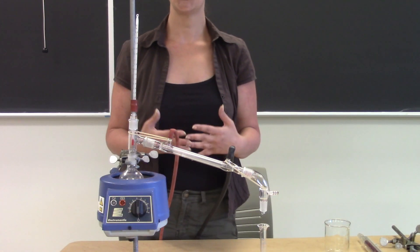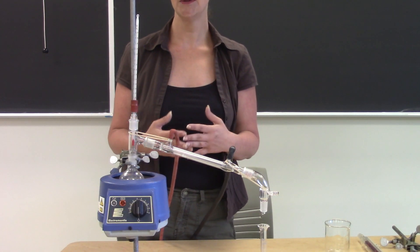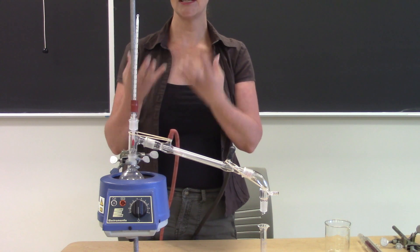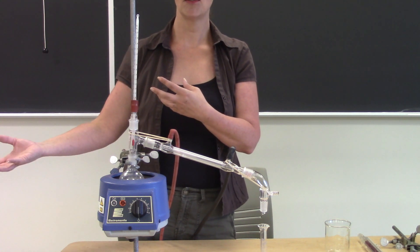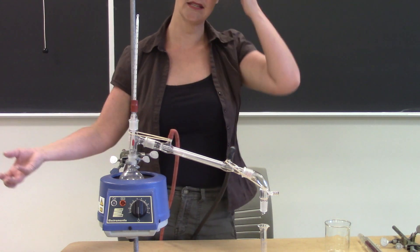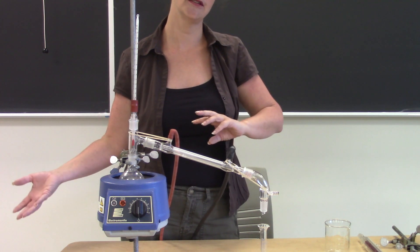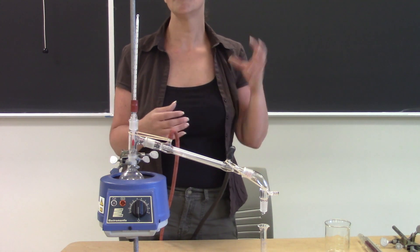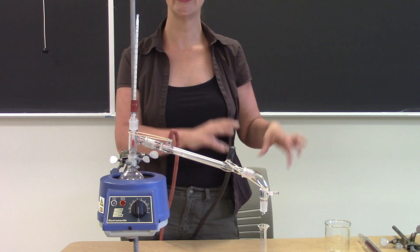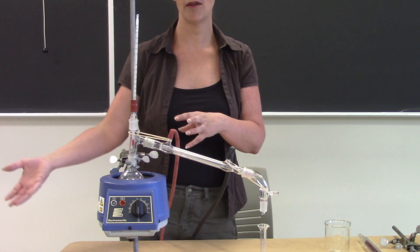The point of a distillation is to purify a liquid by boiling it, turning it into a vapor, and then collecting the vapors into another container. We condense them out as a liquid over there. What that does is leave the impurity behind in the original flask and then you have a pure solvent.